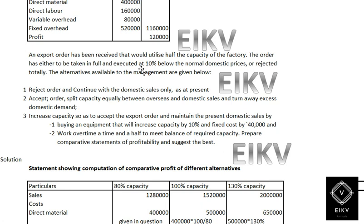The options given are: reject the order and continue with the present domestic sales only at the present level; or accept the order and split capacity equally between the overseas and domestic sales and turn away the excess domestic demand.